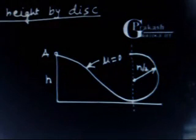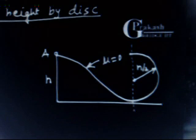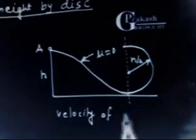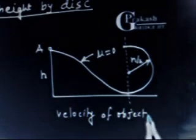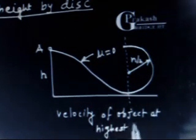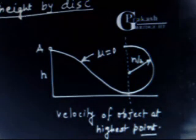We apply energy conservation since friction is negligible. We have to find the velocity of the object at the highest point of its trajectory after breaking off the groove. So we need to find: what is the velocity of the object at the highest point after the breaking of the groove?